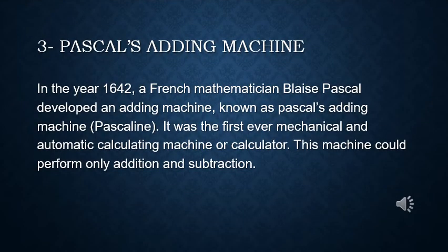The third device is Pascal's Adding Machine. It was invented by a French mathematician, Blaise Pascal, in the year 1642. It was the first ever mechanical and automatic calculating machine which could perform addition and subtraction.